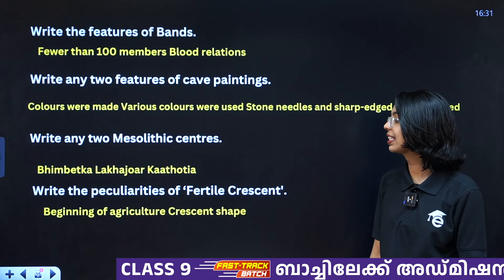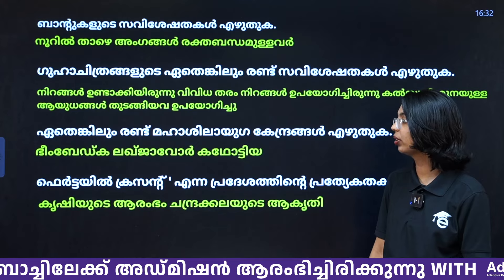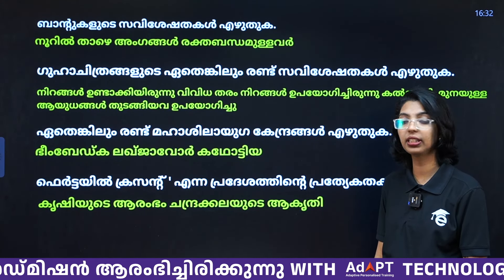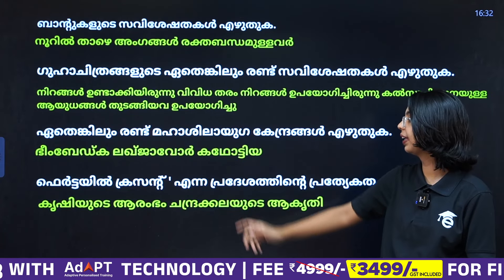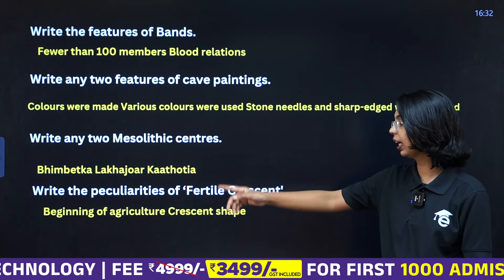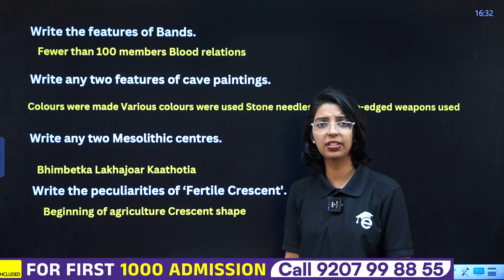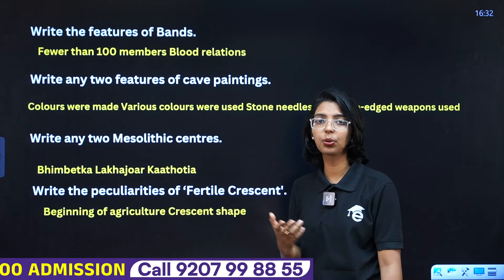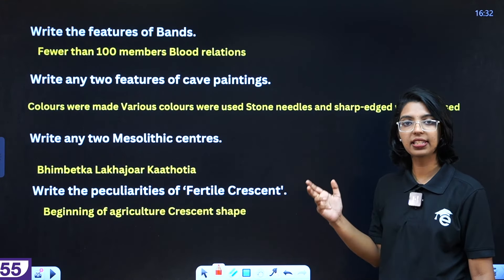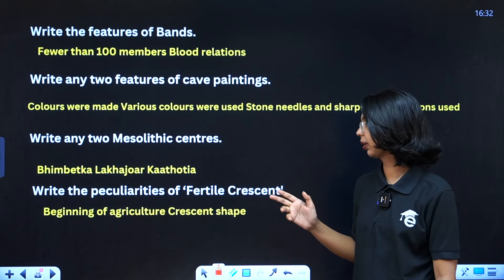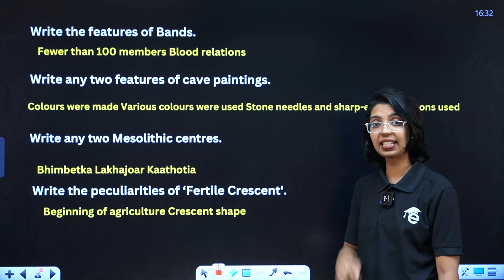Write any two Mesolithic centers. We are going to look at these Mesolithic centers. The next question is: write the peculiarities of the Fertile Crescent.